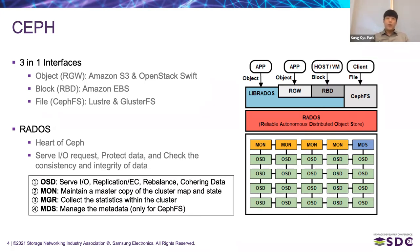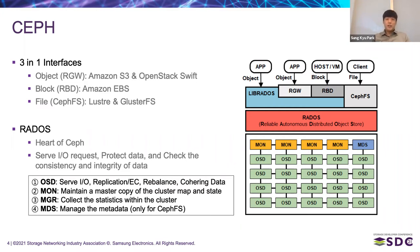As a result, it can serve not only block services, which demand strong consistency, but also object and file services. RADOS is composed of OSD, monitor, and manager. OSD, which stands for Object Storage Daemon, runs on a typical storage service node and is responsible for serving IO from the user, replication, erasure coding, rebalancing, and cohering data. Monitor maintains a master copy of the cluster map and periodically checks the status of OSD. It triggers the recovery procedure if an OSD stops. The role of manager is to collect statistics within the cluster, and MDS is only for file service to manage metadata.